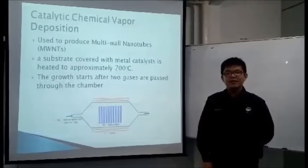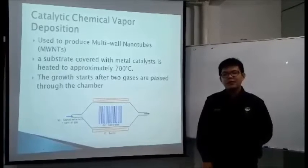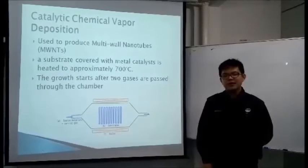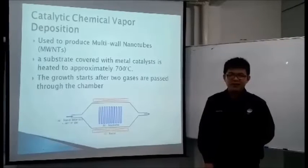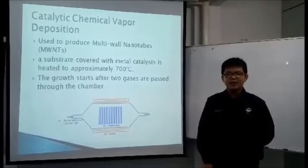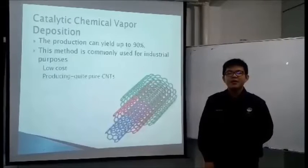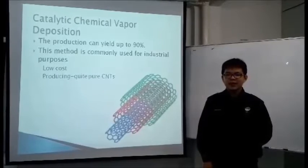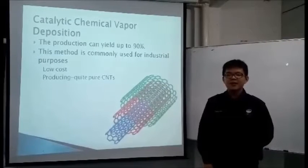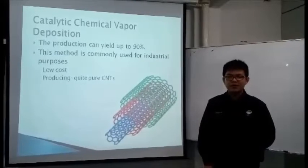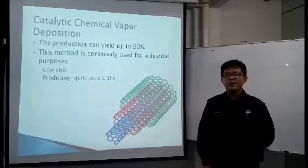In this method, we normally produce multi wall nanotubes. A substrate covered with metal catalyst like cobalt and iron is heated to approximately 700 degrees Celsius. The growth starts after two gases are passed through the chamber. The production can yield up to 90% of CNTs. This method is commonly used for industrial purposes because it is low cost and produces quite pure CNTs.